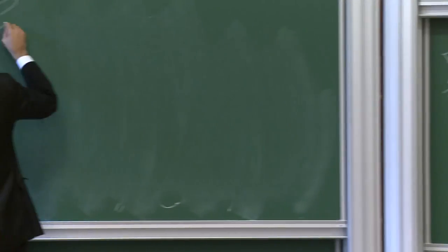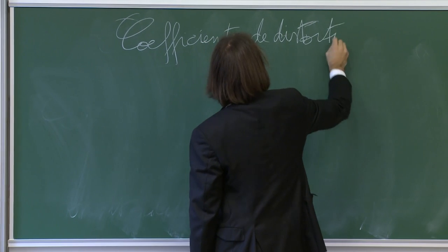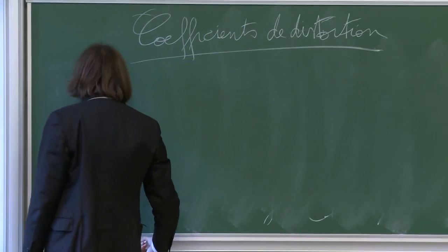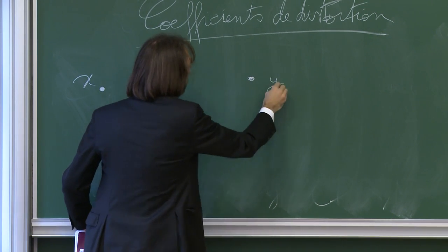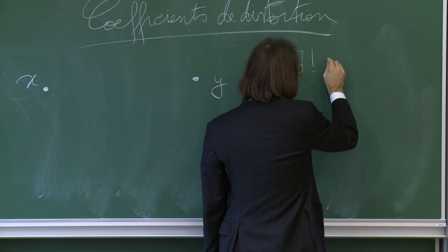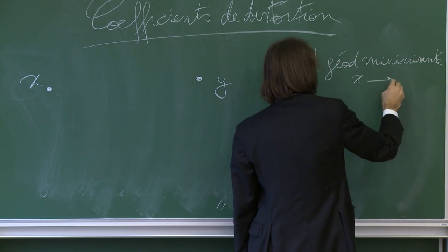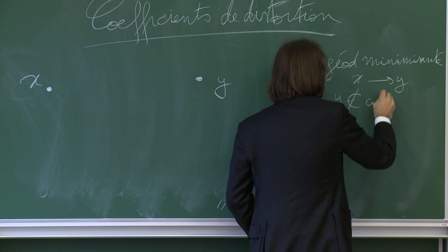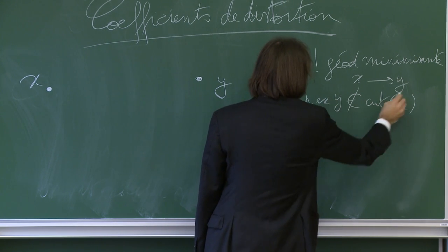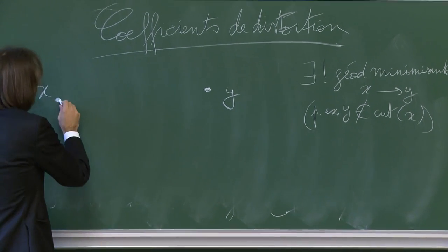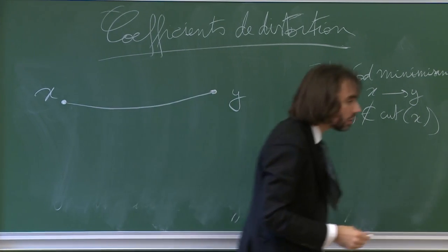Coefficient de distorsion : cela capture très bien l'esprit de la courbure de Ricci par les estimations jacobiennes. Je prends un point x et un point y. Pour simplifier, on suppose qu'il existe une unique géodésique minimisante de x à y, c'est-à-dire que y n'est pas dans le lieu de coupure de x. Je regarde le long de cette géodésique γ, et je prends une petite boule B_r(y) de rayon r autour de y.